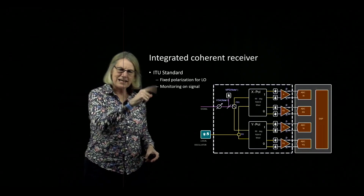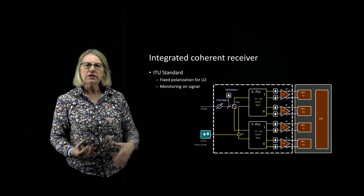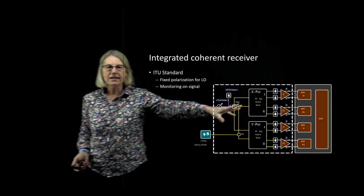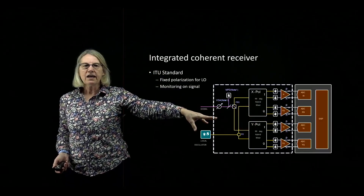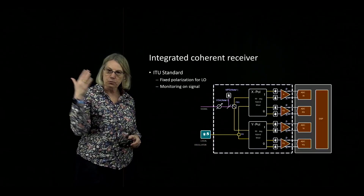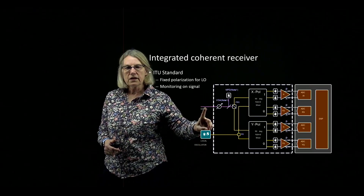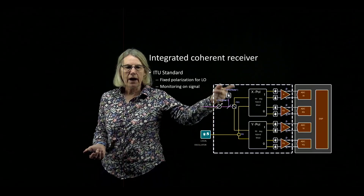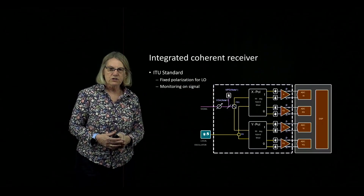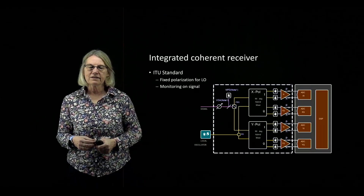There is an industry standard — not ITU, but another industry body — that was published many years ago, so that when you buy an integrated coherent receiver today it will have this structure. It has a polarization-maintaining input for the local oscillator, ensuring you're putting in a 45-degree angle, and for the signal there are some optional monitoring signals which can be useful for observing what's going on in your coherent detector. But essentially they all have the same format as shown here.